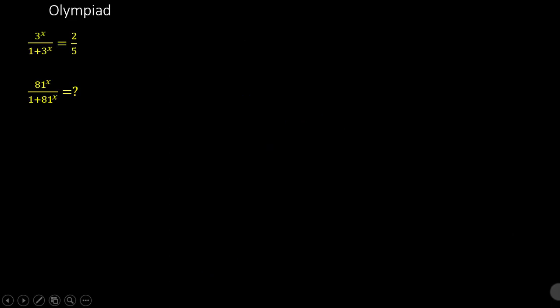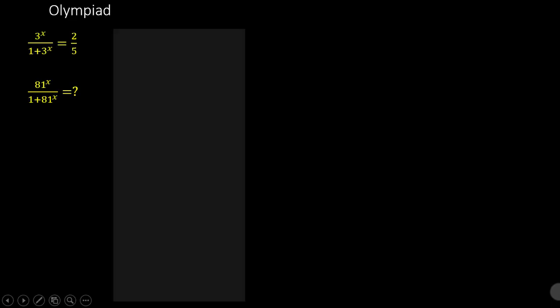Now let's look at the solution. We have 3 to the power x over 1 plus 3 to the power x is equal to 2 over 5. Now let's let a be equal to 3 to the power x. That changes our expression to a over 1 plus a is equal to 2 over 5, which is basically a linear equation. Let's solve for the value of a.